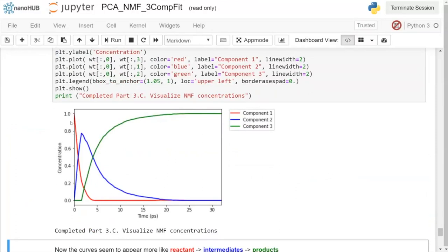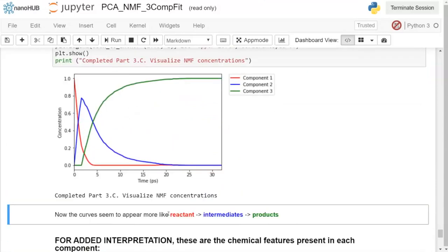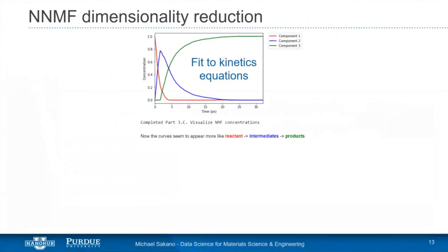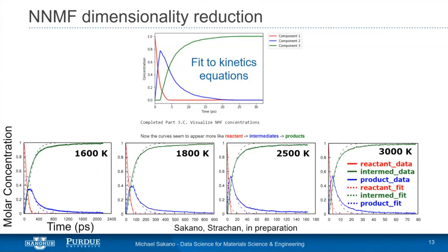After normalization, we have something much more interpretable matching our final goal: three curves explaining the decomposition process. The red component one equals reactants, the blue component two equals intermediates, and the green component three equals products. Jumping back to the slides: with these concentration profiles we can fit rate equations and pass the kinetics parameters into mesoscale or continuum models — demonstrating the value of dimensionality reduction.